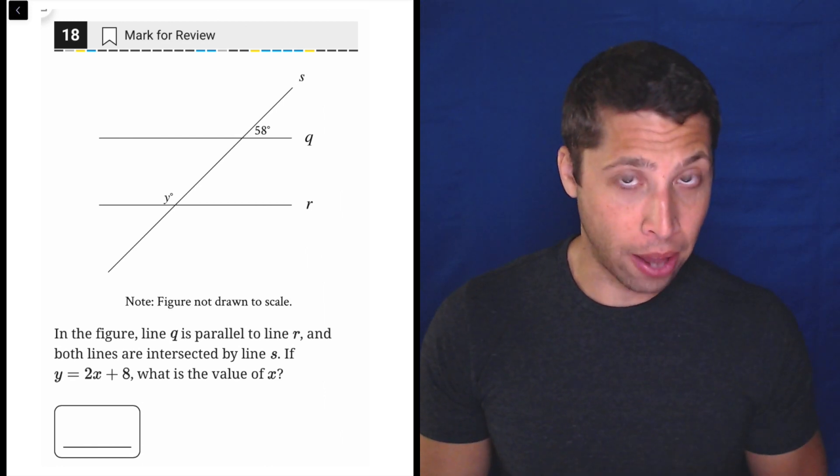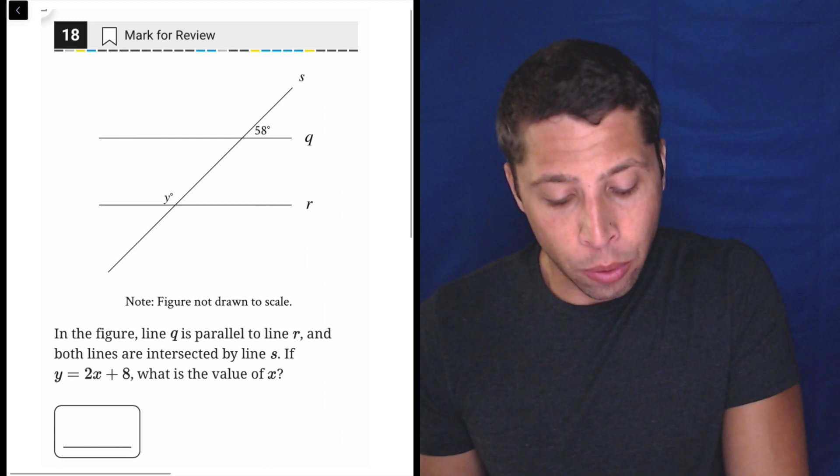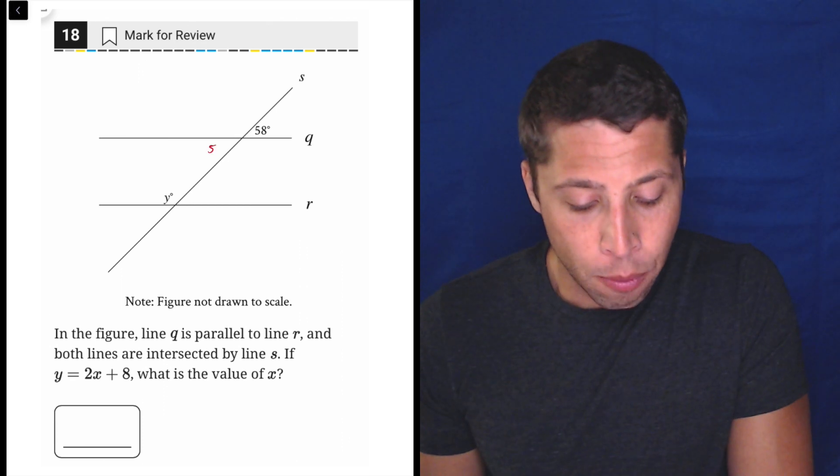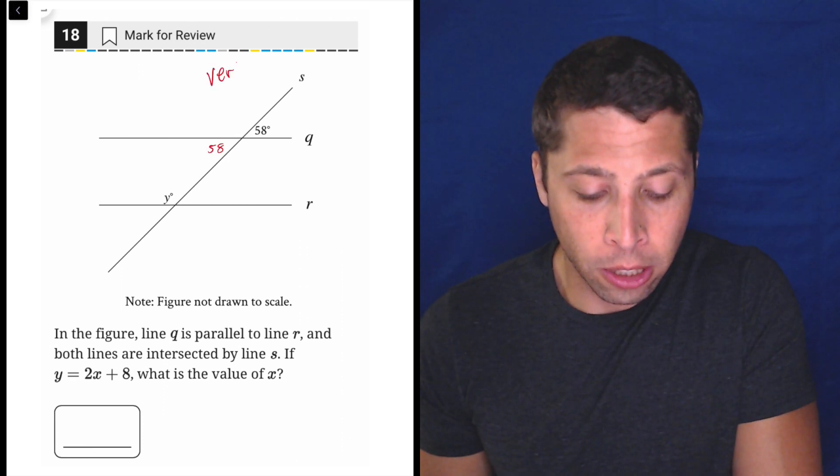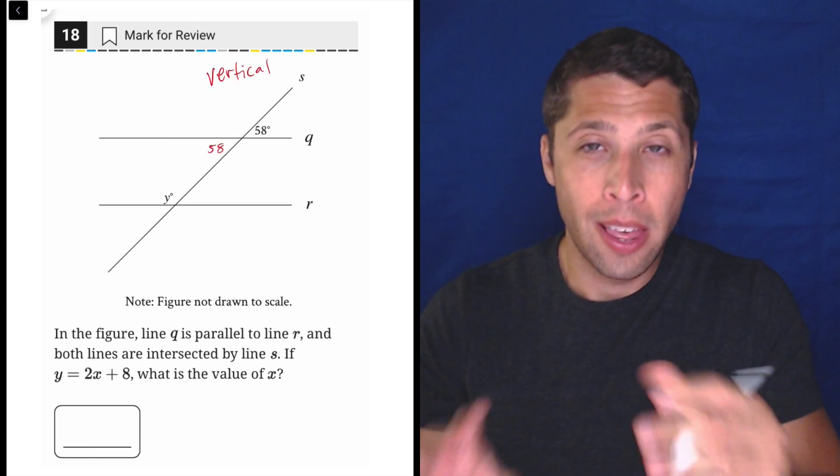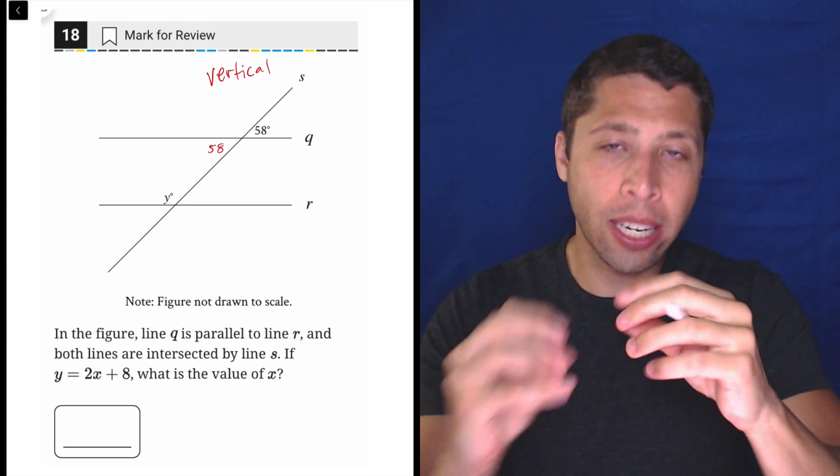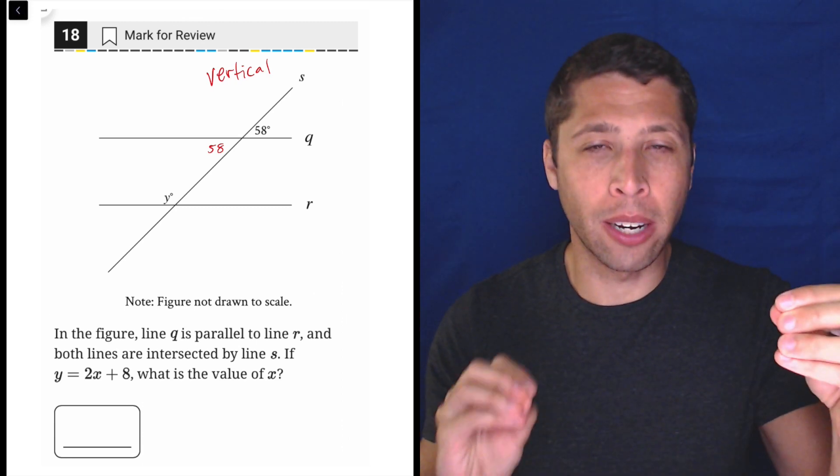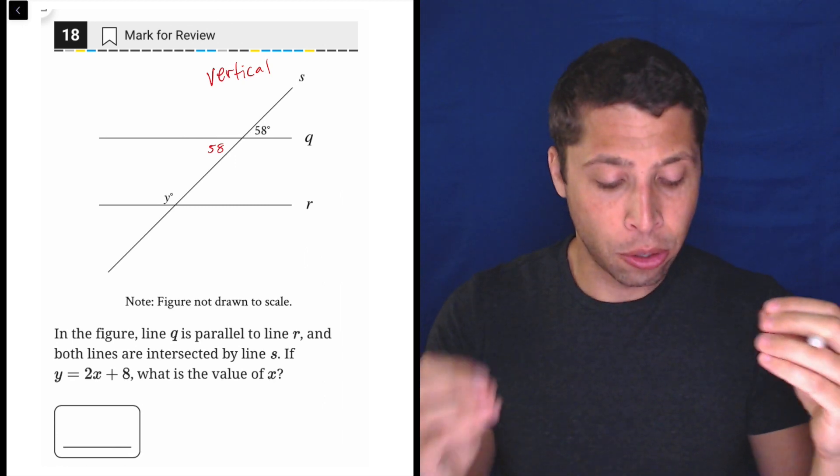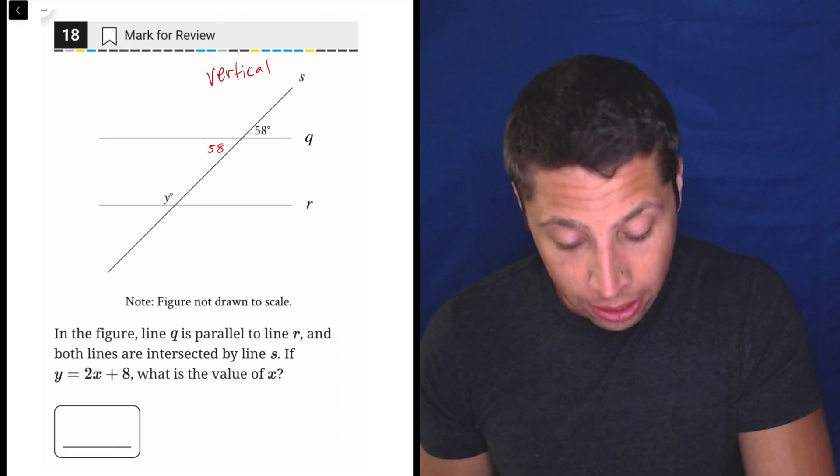The way that I think about it is I know that if this is a 58 on the top, because of something called vertical angles, any time we have lines intersecting, the angles that are opposite each other in that intersection point are equivalent, are congruent. So that 58 is also here.